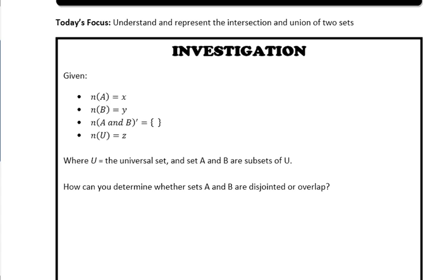First, the number of elements in A equals X. The next bullet means the number of elements in B equals Y. The third bullet - the complement of A and B is empty set. There's nothing in it.